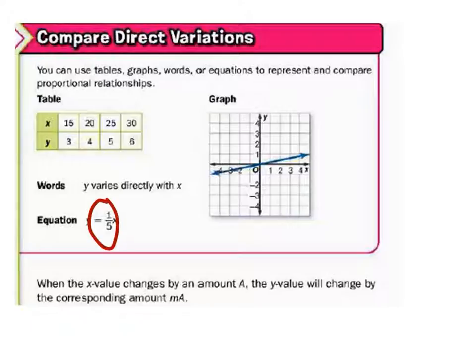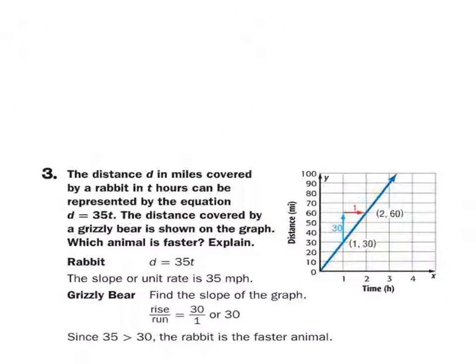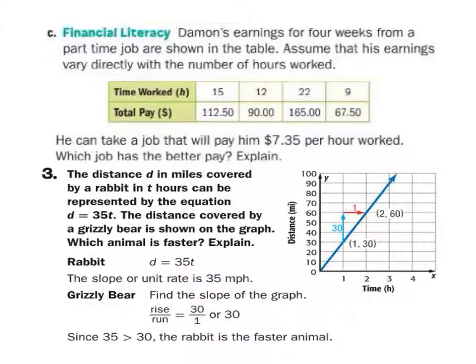Comparing direct variations, all we really got to worry about is the slope. If slope is bigger than one than the other. So on this one, the distance covered by the grizzly bear is showing which animal is faster. All you've got to do is compare the slope. So on this one, the slope is 35. This one's 30. So naturally, the rabbit is faster because he has a bigger number.